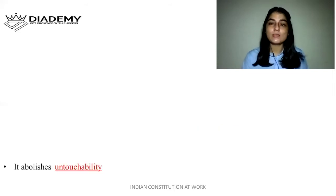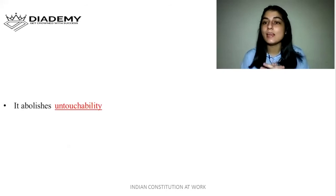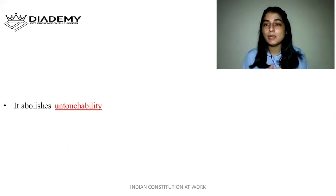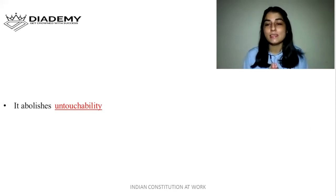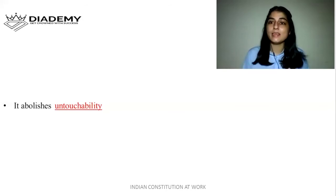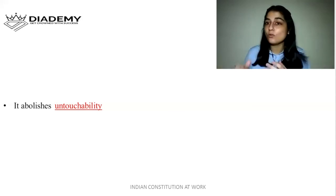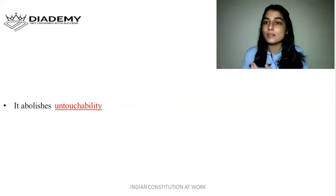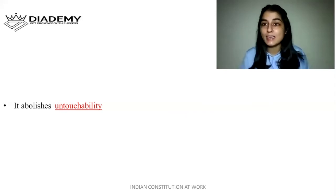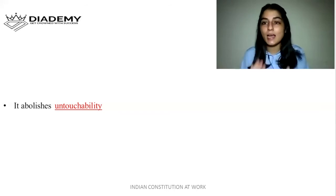Article 17, which was left earlier, abolishes untouchability. In ancient times, untouchability used to exist. If any Dalit person touched something, people from the upper caste would not touch that thing because it was said that a lower caste person had touched it — that was untouchability. So Article 17 abolishes untouchability.